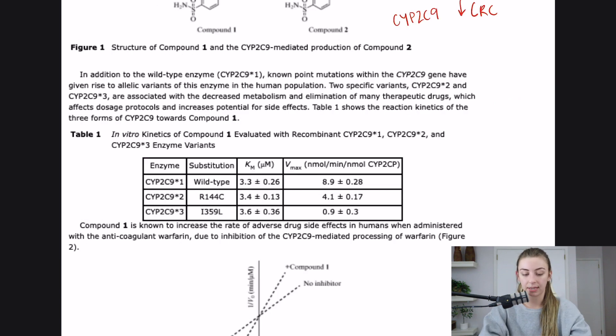In addition to the wild type enzyme, known point mutations within the CYP2C9 gene have given rise to allylic variations or variants of this enzyme in the human population. Two specific variants, CYP2C9 star two and star three are associated with the decreased metabolism and elimination of many therapeutic drugs, which affects drug dosage protocols and increases potential for side effects. So the star two and the star three decreased drug elimination, increases side effects.